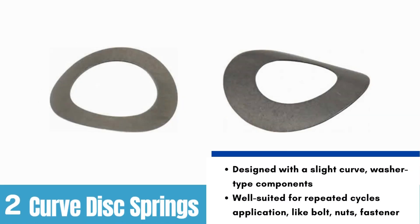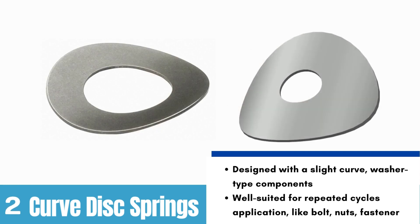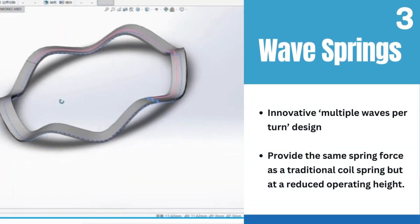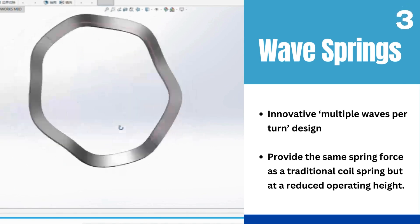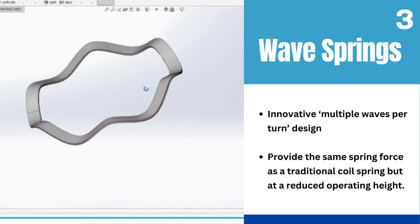Next we have curved disc springs. These springs are designed with a slight curve—it's a good partner for bolts, screws, and other fasteners. The wave springs' innovative multiple waves per turn design can offer the same spring force as a traditional round wire coil spring but at 50% of its operating height.